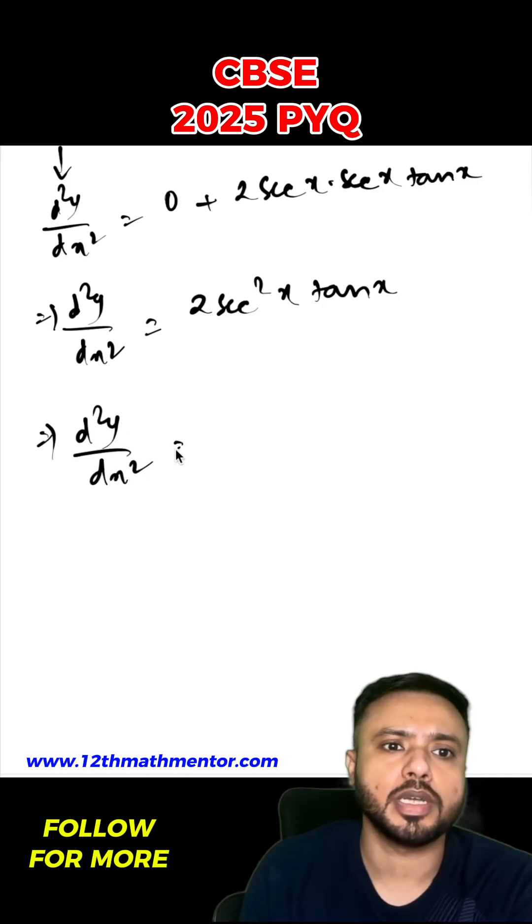So d²y/dx² can be written as 2/cos²x into tan x. This sec²x I have written as 1/cos²x.